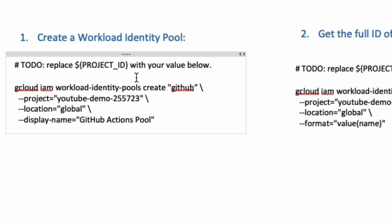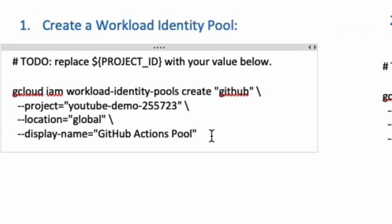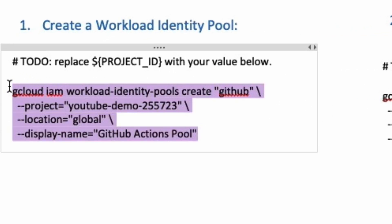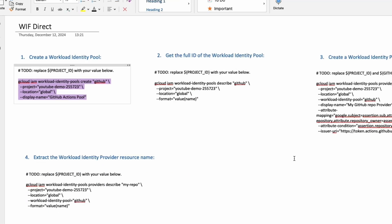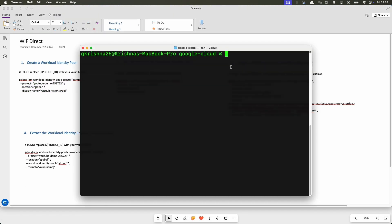The first step is to create a workload identity pool. Copy this command — I'm going to paste the GitHub link created by Google Cloud themselves. As usual, you have to authenticate your terminal to connect to Google Cloud using either a service account or your own identity. In my case, I'm using my user account because I'm the owner of this project.